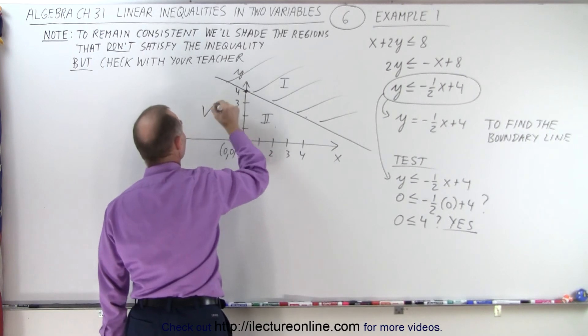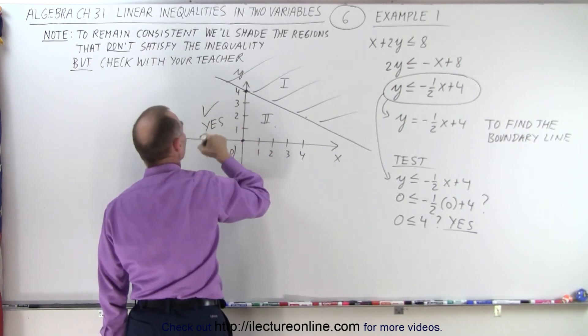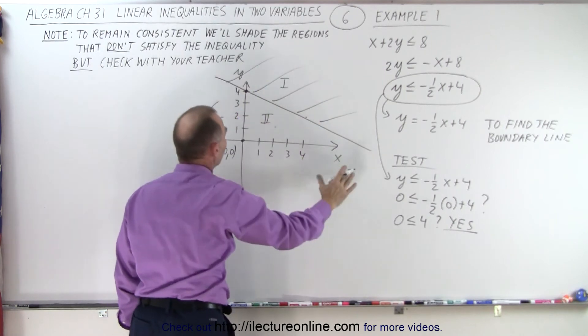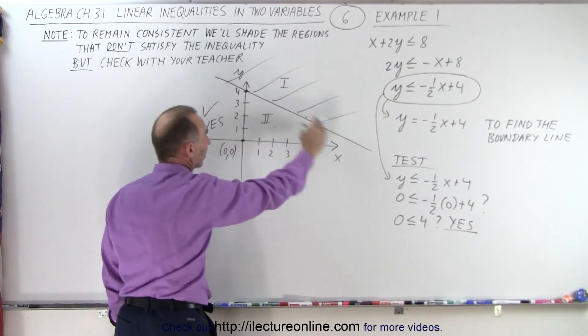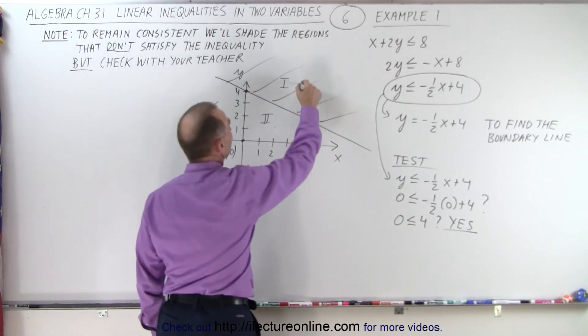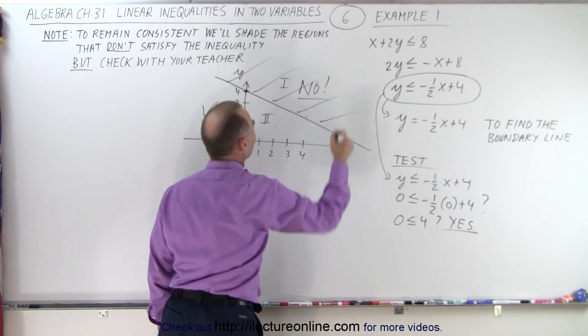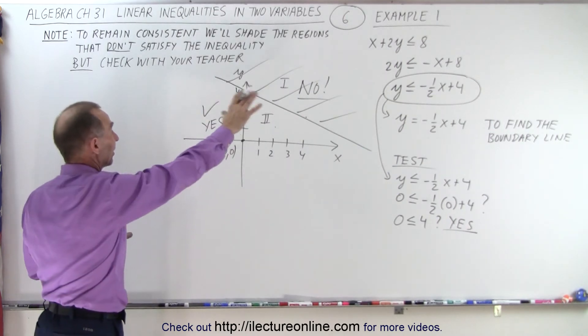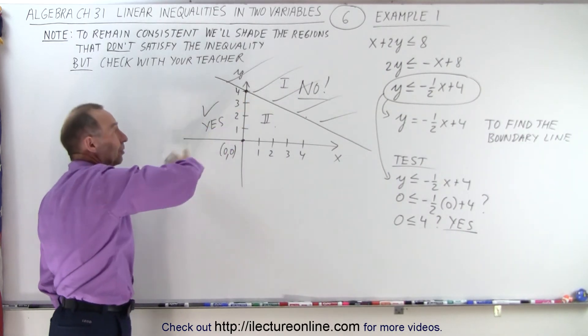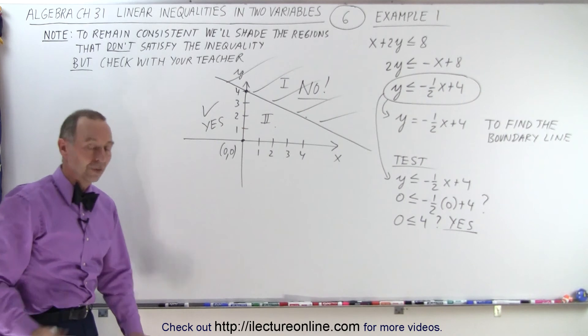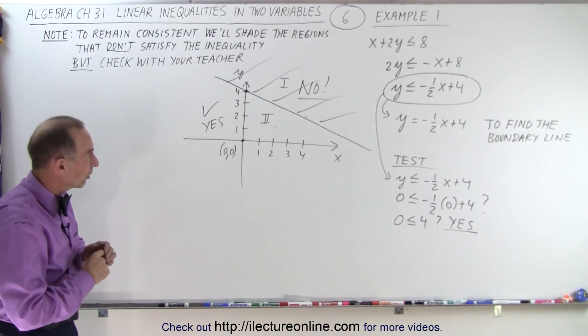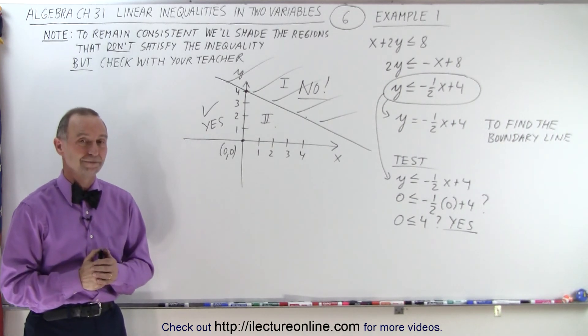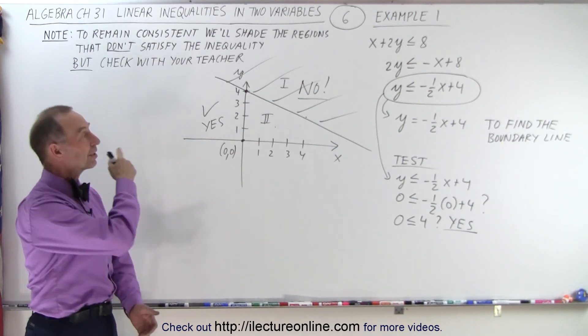And so this region, yes, this is the region that satisfies the inequality. We also include the points on the line, so everything in this region plus the line satisfies the inequality. And this one is no, it does not satisfy the inequality. So I like the fact that we can say yes here, no there, to make it clear which side satisfies and which side doesn't satisfy the inequality. And that is how it's done. See, that makes it clear.